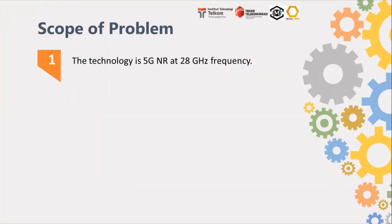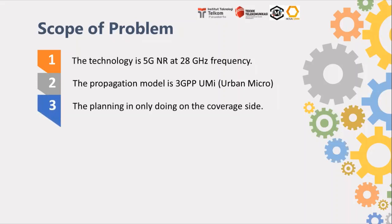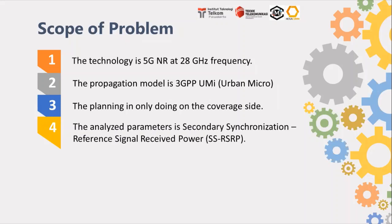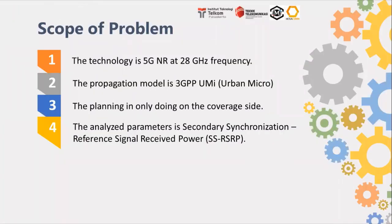Third, some points for the limitation of the problem. Number one, the technology is 5G NR at 28 GHz frequency. The propagation model is 3GPP urban micro. The planning is only done on the coverage site. And the analyzed parameter is Secondary Synchronization Reference Signal Received Power, or SS-RSRP.